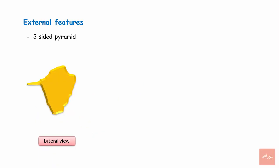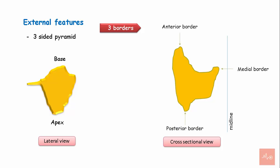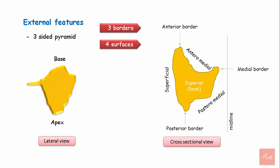Regarding external features of the parotid gland from the lateral aspect, the parotid gland appears like a three-sided pyramid with the apex pointed downwards and base superiorly. In cross-sectional views, it shows three borders: the medial border, anterior border, and the posterior border. The parotid gland also has four distinct surfaces: the superficial surface, the anteromedial surface, the posteromedial surface, and the superior surface or the base of the parotid gland.